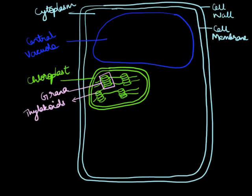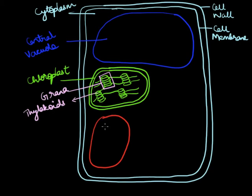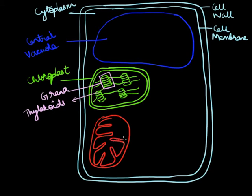The next structure is the mitochondria — the powerhouse of the cell. Just draw an oblong shape. A mitochondrion is also a double-membrane structure. The distinct feature of a mitochondrion is that the inner membrane is made up of a large number of folds called cristae. This is how we draw the inner membrane of the mitochondrion — it has a large number of folds. This is the mitochondria.